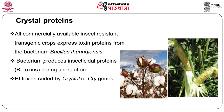Bacillus thuringiensis is a gram-positive bacteria that produces highly insecticidal crystal proteins during sporulation, also called Bt toxins. Bt toxins of several strains of this bacterium have been used as bio-insecticides for several years. More than 400 genes encoding toxins from Bacillus thuringiensis have been identified so far, and the majority of these identified cry genes have been engineered into plants.